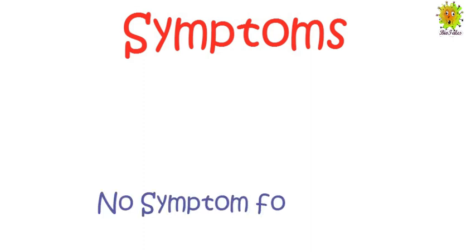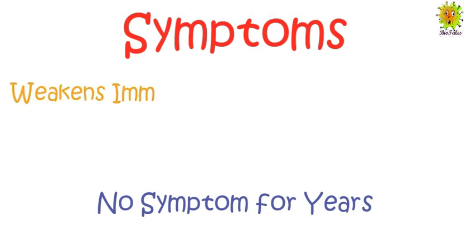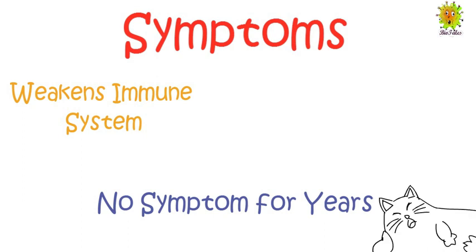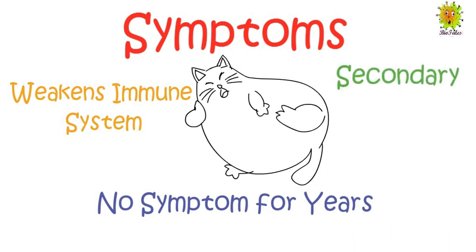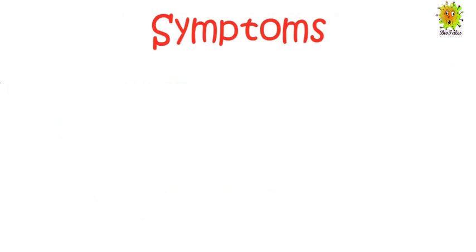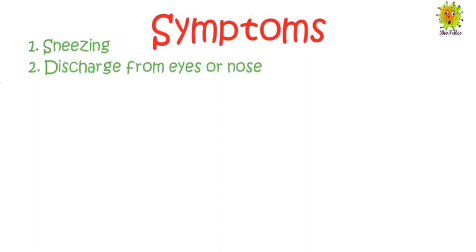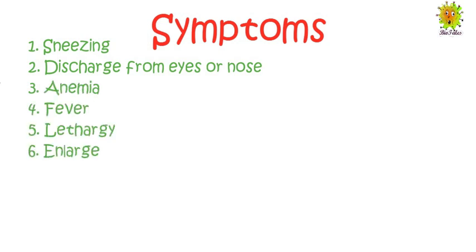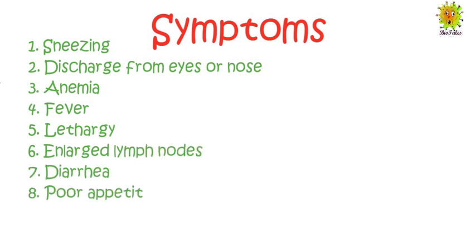Now we see what are the symptoms of FIV. If a cat is infected with feline immunodeficiency virus, no symptoms appear for many years. However, it weakens the immune system of the cat over time, due to which the cat can be affected by many secondary infections. The symptoms that appear in affected cats are: